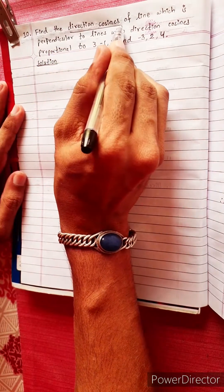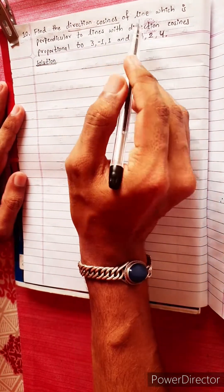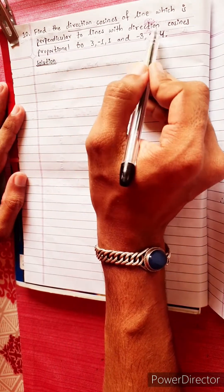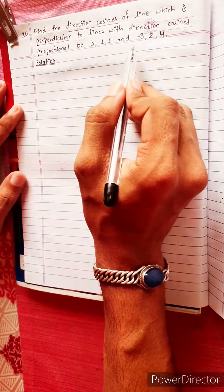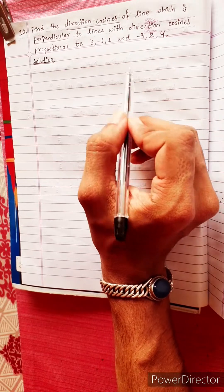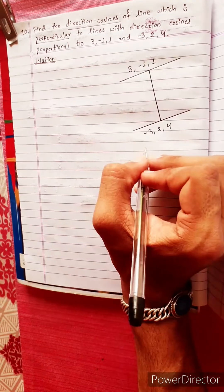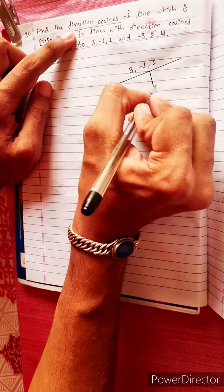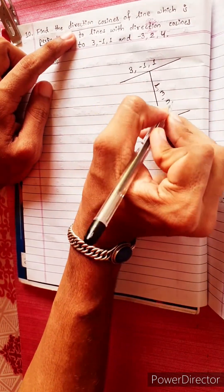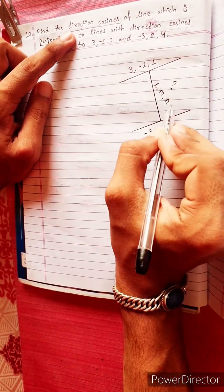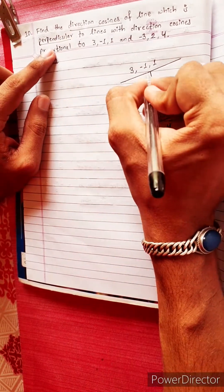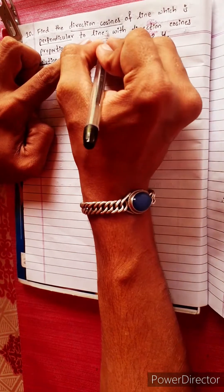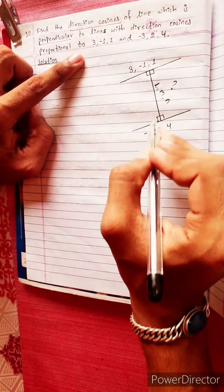Find the direction cosine of a line which is perpendicular to two lines with direction cosines proportional to L, M, N. The line will be perpendicular to these two given lines.